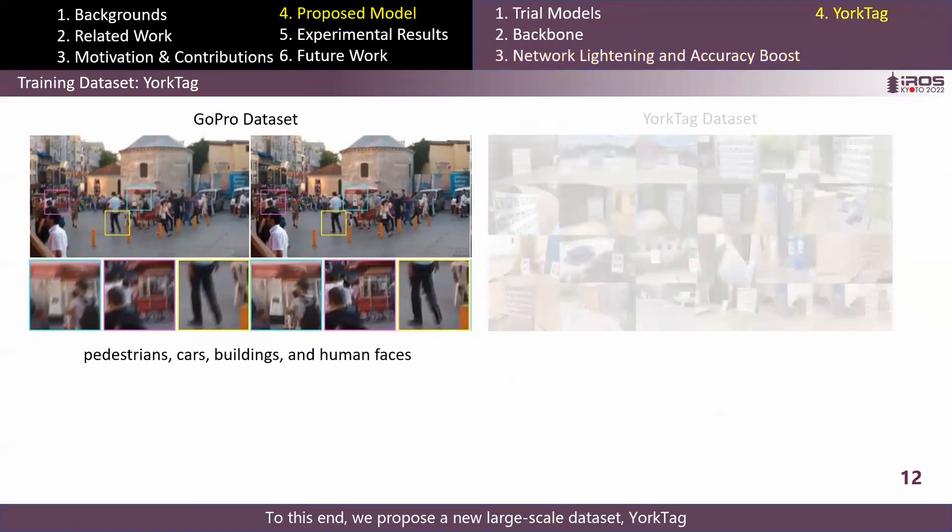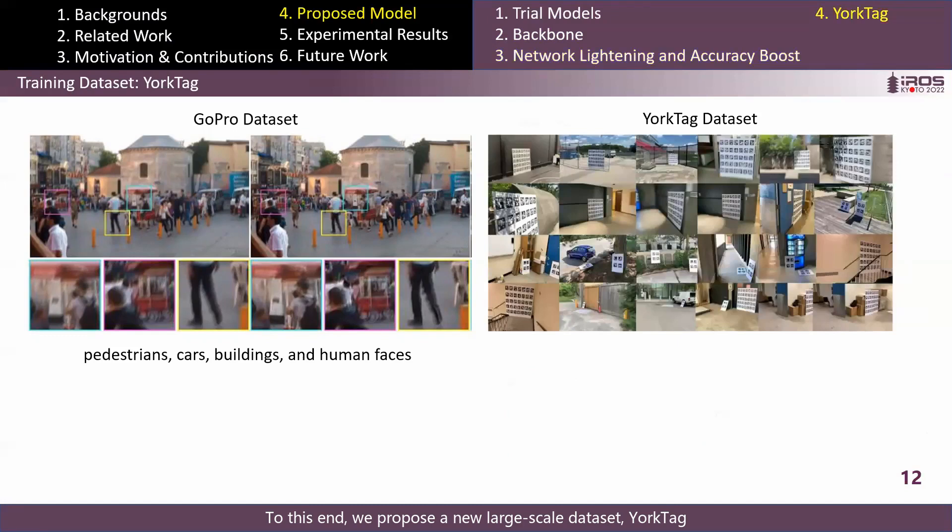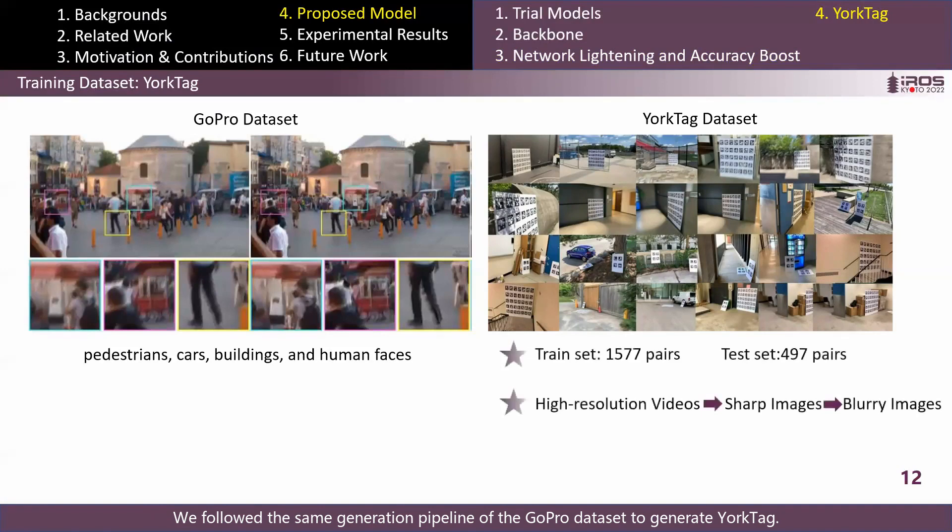To this end, we propose a new large-scale dataset, YorkTag, that provides paired blurred and sharp images containing AprilTags and ArUco codes. We followed the same generation pipeline of the GoPro dataset to generate YorkTag. Details are given in our paper. Note that for the experimental results I am going to introduce, the models are trained and tested on the YorkTag dataset.